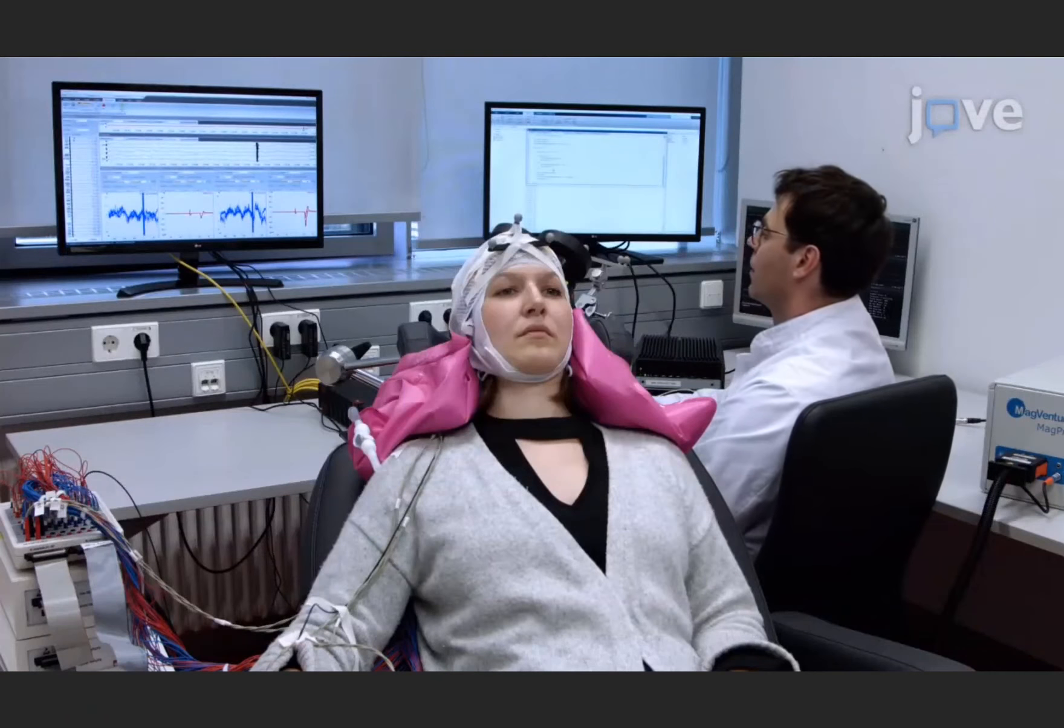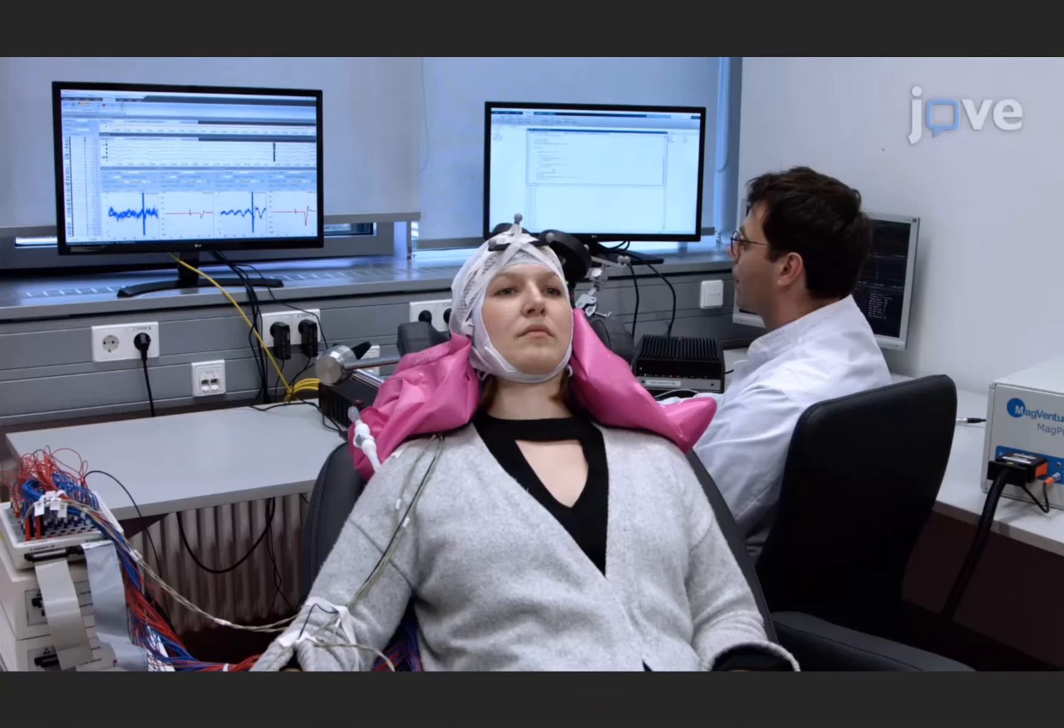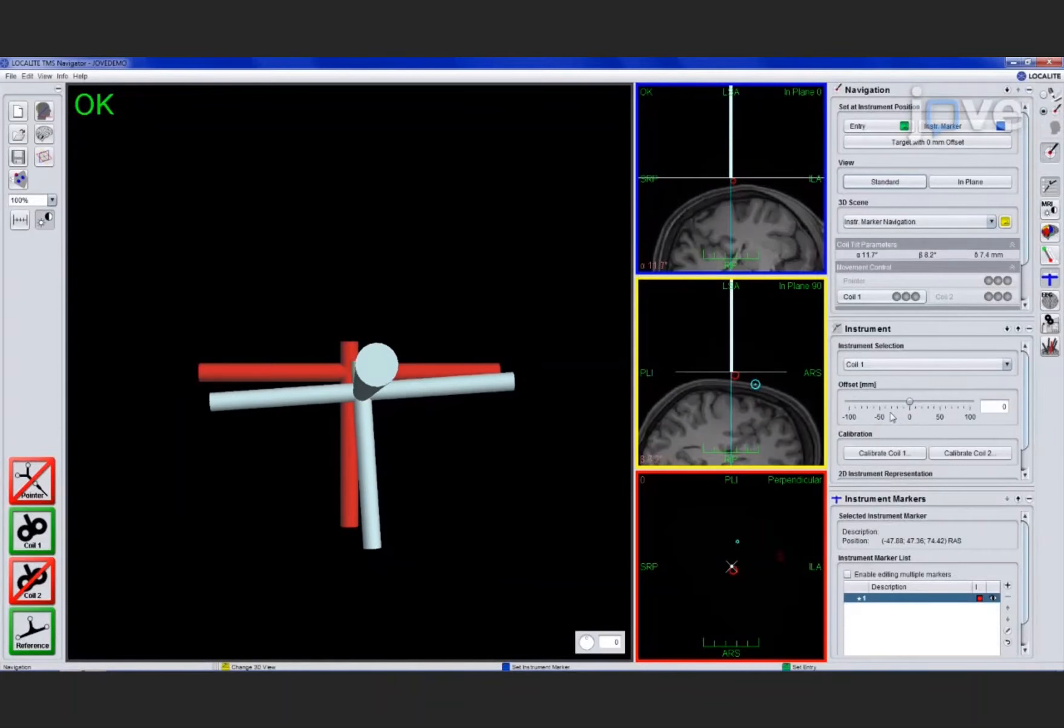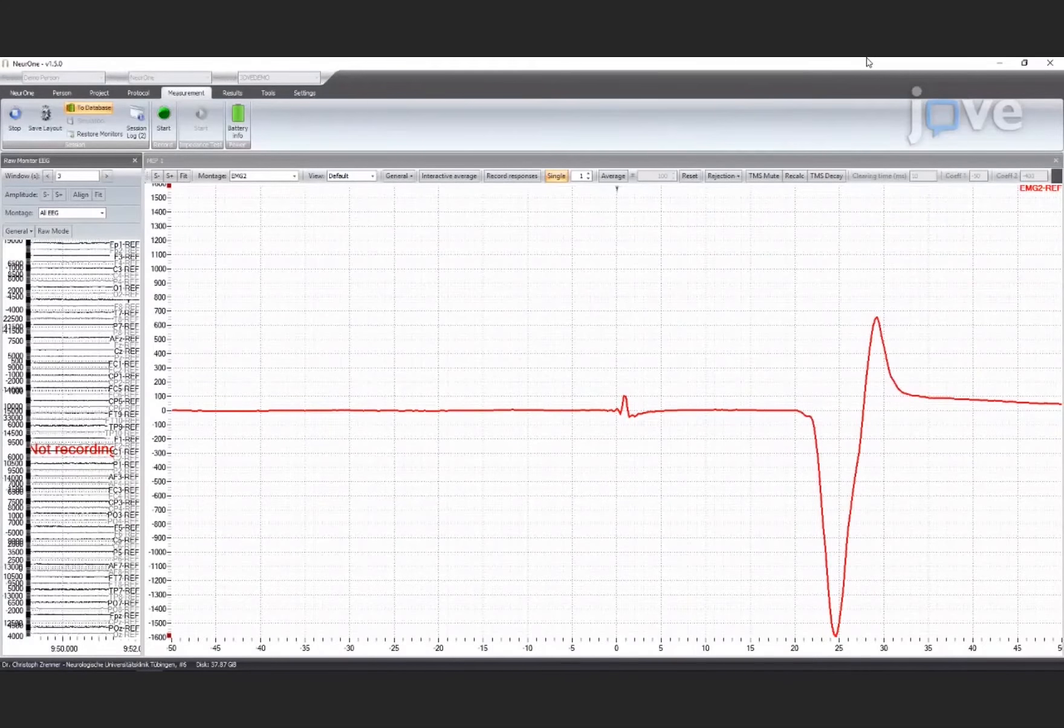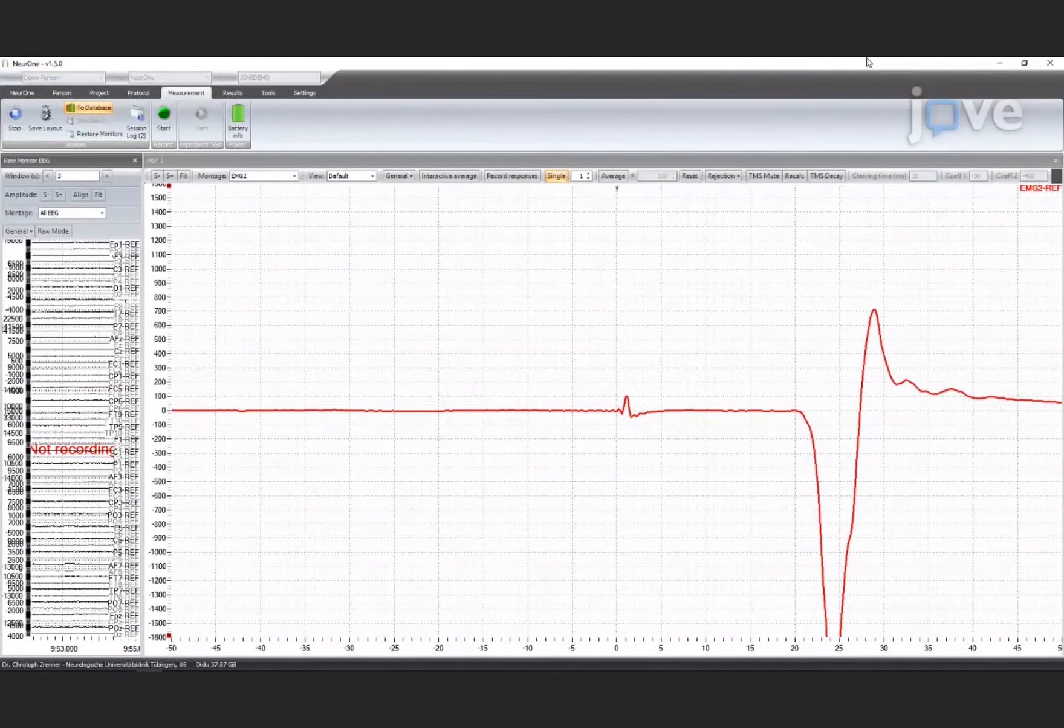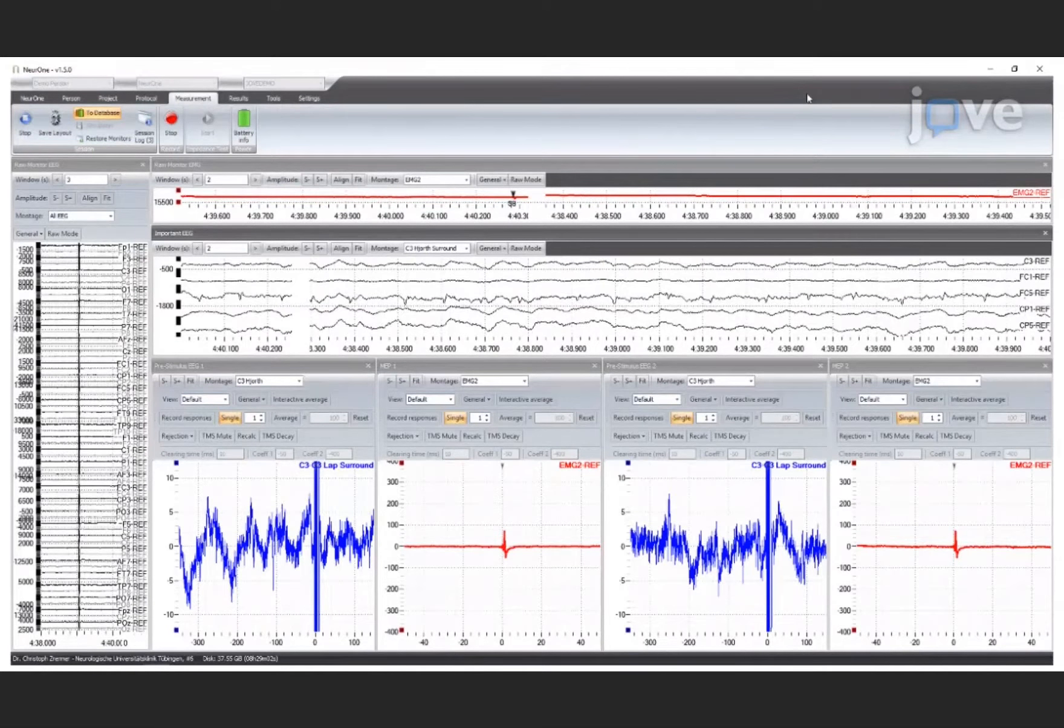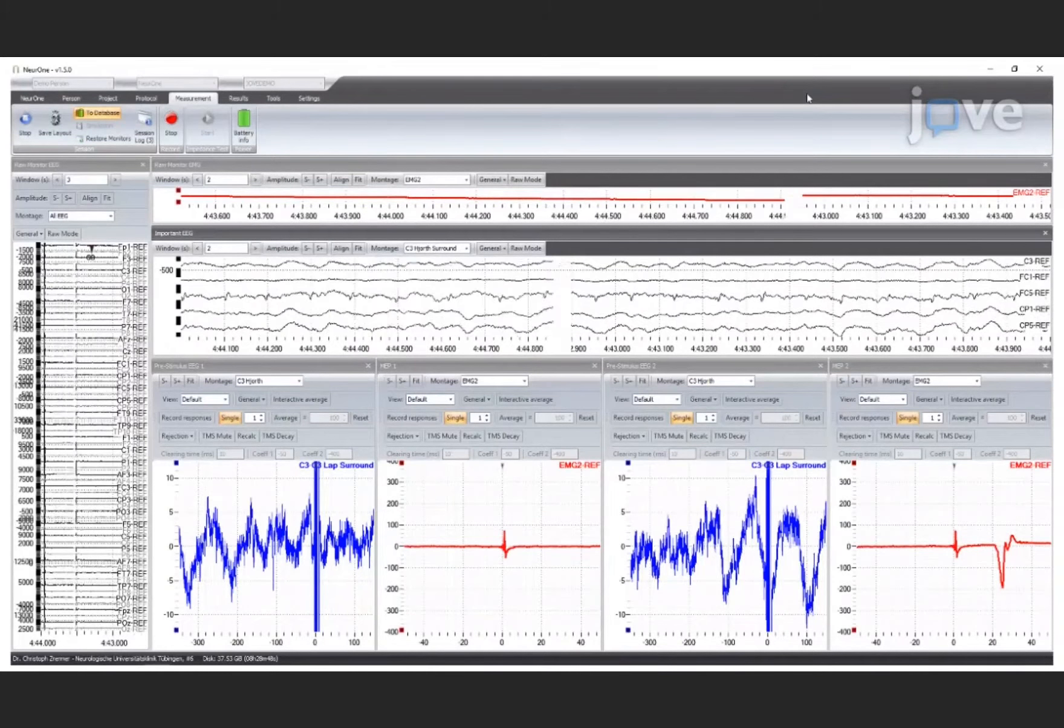Then run the experiment for about 10 minutes to acquire a sufficient number of trials to differentiate phase-specific stimulation effects. During the experiment, the coil position will be monitored on the neural navigation system and the EEG and EMG signals will be monitored on the EEG system. The raw data, as well as pre-stimulus EEG and post-stimulus muscle response for each condition, are also displayed on the EEG system.